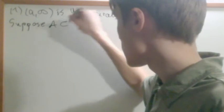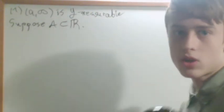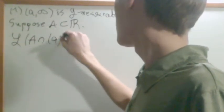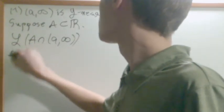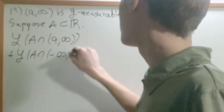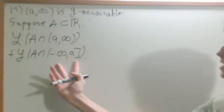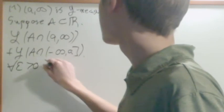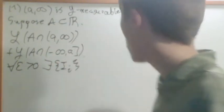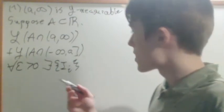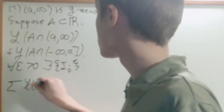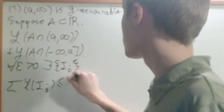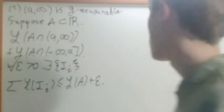Suppose A is a subset of ℝ. What we have to analyze is the Lebesgue measure of A intersect [a, ∞) plus the Lebesgue measure of A intersect (-∞, a], because that is the complement of [a, ∞). For every ε > 0, there exists a set of open intervals such that the sum of their lengths is less than or equal to the Lebesgue measure of A plus ε, by the definition of infimum.